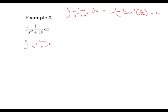Our value of a is 4. So when we calculate the integral of 1 over x squared plus 4 squared, we get 1 over a — that is, 1 over 4 — times tan inverse x over a, giving us 1 over 4 times tan inverse x over 4 plus c.